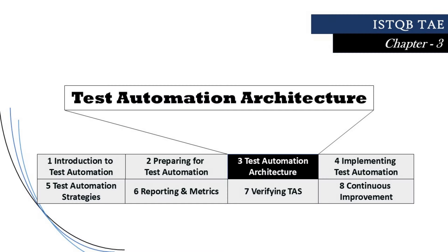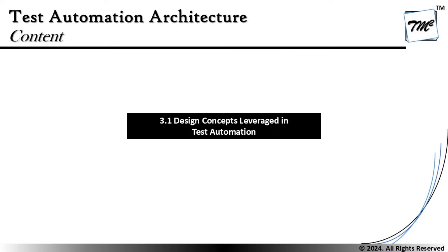Hello friends and greetings for the day. Welcome back to another tutorial on ISTQB Test Automation Engineer Certification. We are getting started with Chapter 3, that is Test Automation Architecture. As part of this chapter, we have one segment with subtopic 3.1, Design Concepts Leveraged in the Test Automation. In this tutorial, we'll be talking about the capabilities in a test automation architecture and explaining what exactly the entire architecture of test automation is.